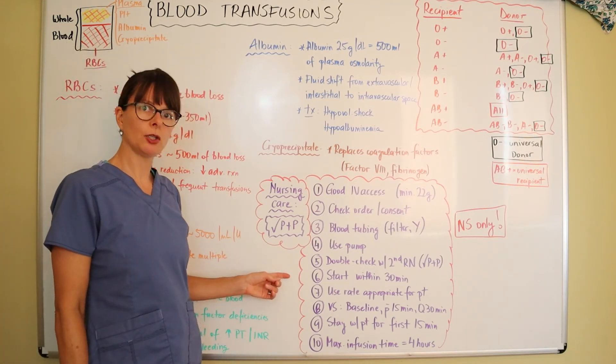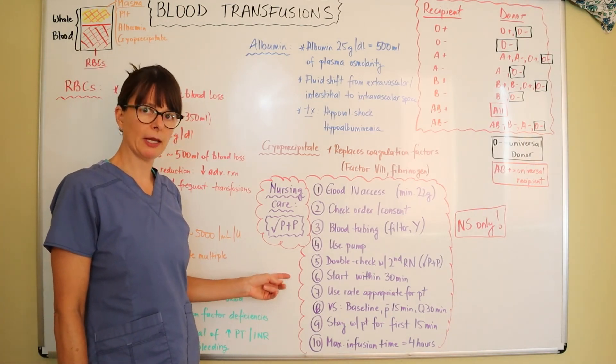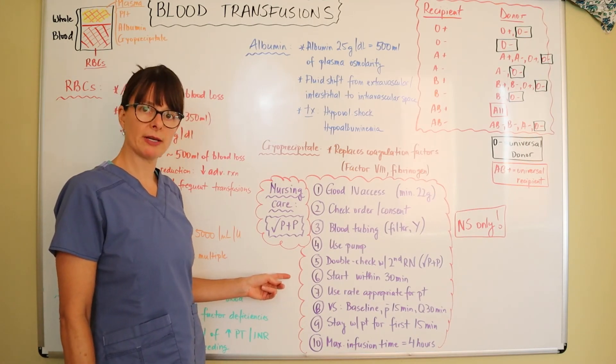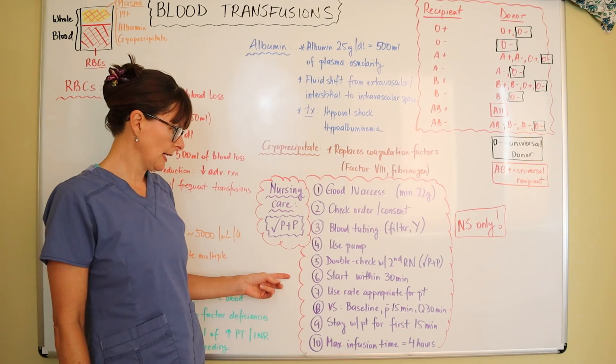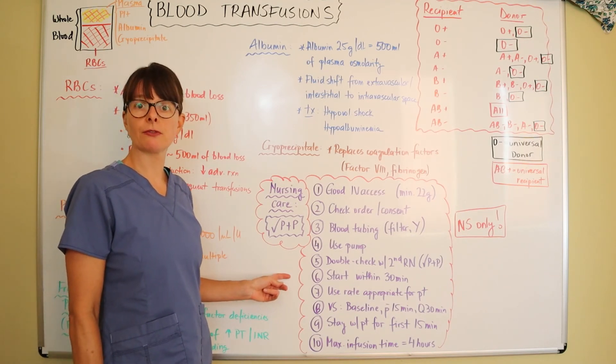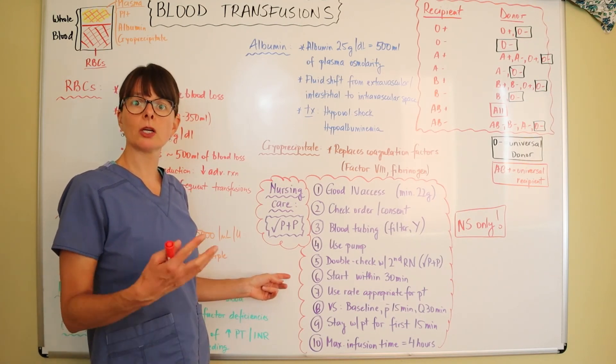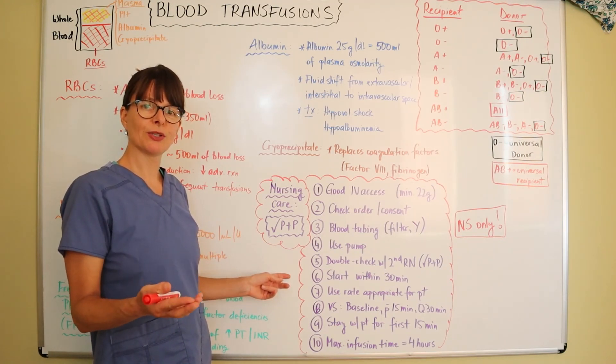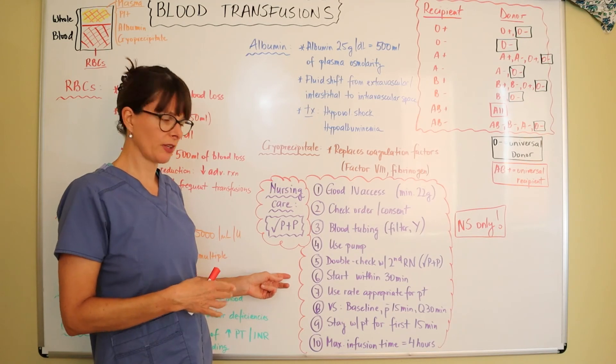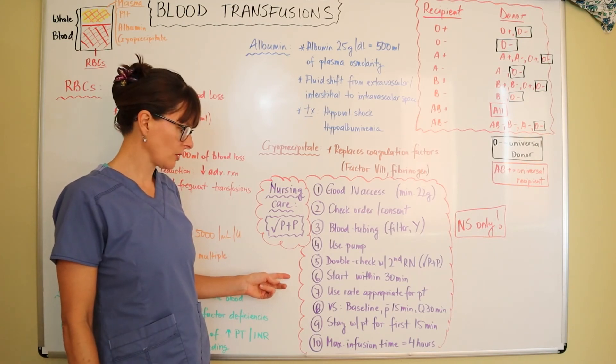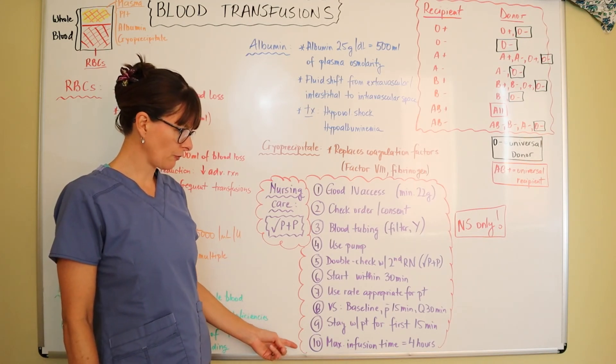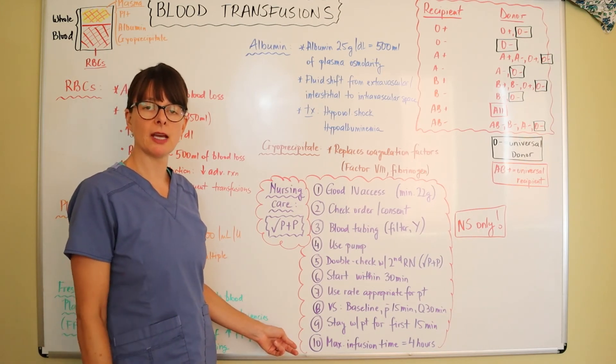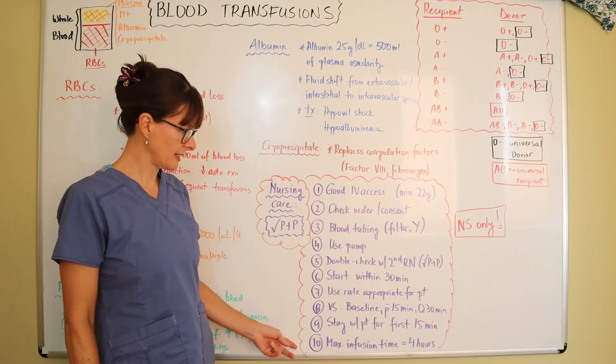Once you pick up the blood from the blood bank at your hospital, the requirement is to start within 30 minutes and that is pretty universal. The reason is that it comes out of the refrigerator. Just like food, you wouldn't leave food on your table forever. The maximum infusion time is 4 hours. That again is for viability and making sure it's still safe.